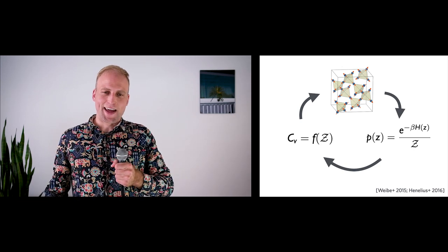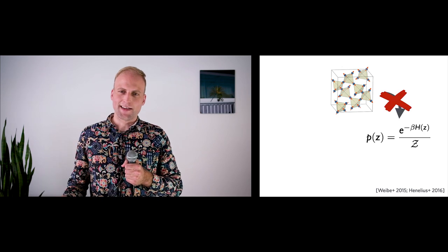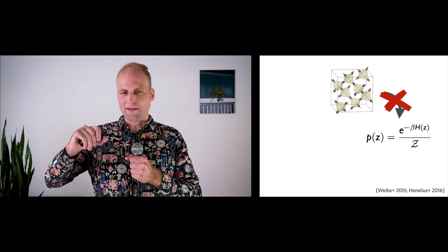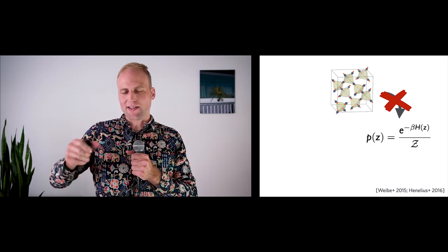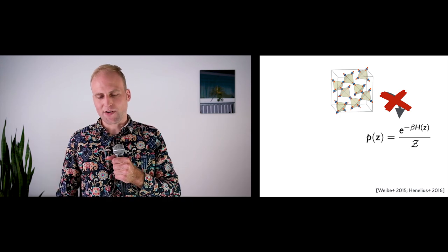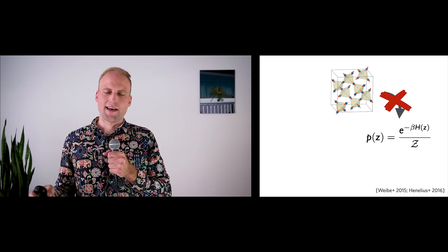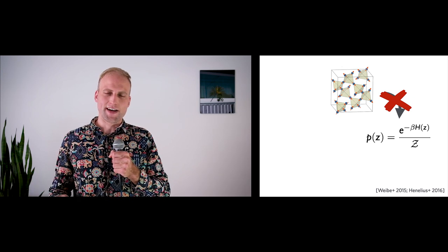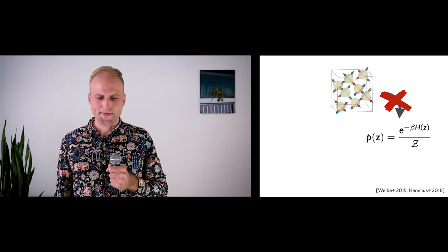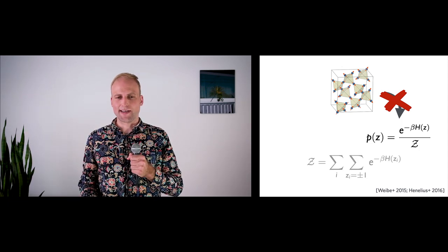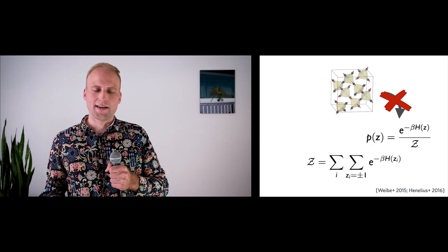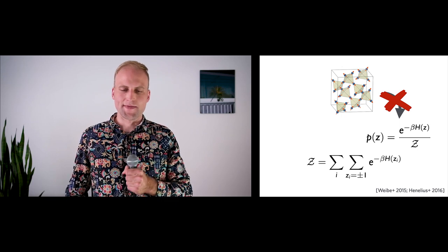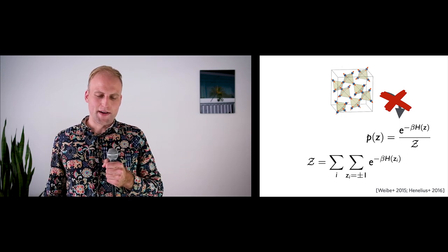This sounds great, but can we do it in practice? Actually at the very first step we're blocked. In order to normalize this probability distribution of random binary variables, we need to normalize over all possible configurations of these magnets — a sum over 2 to the n terms. This is infeasible for most systems we might want to study, so we're blocked at the very first step.